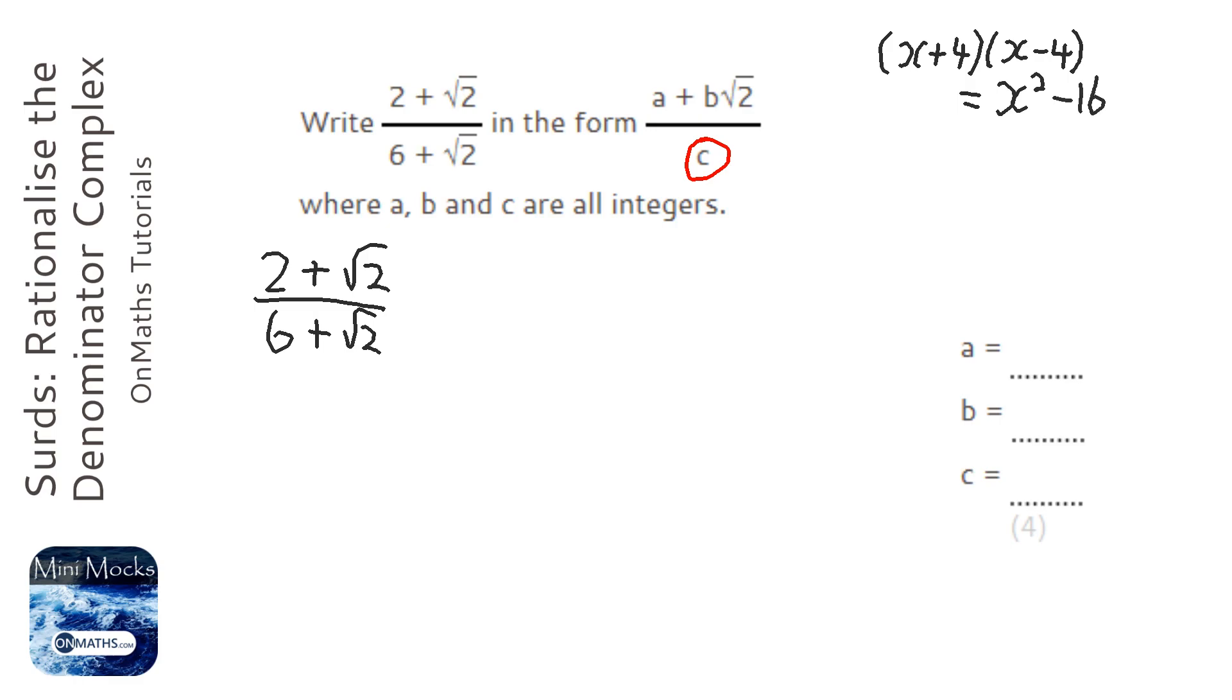We do have the x squared term, but when you times the surd by itself it actually gets rid of the square root. So in this question we've kind of got this bit and all we need to do is times it by this bit.